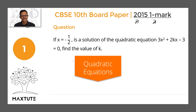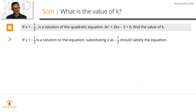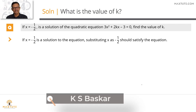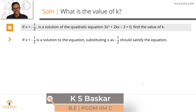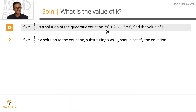The first question is from quadratic equations. If x equals minus half is a solution of the quadratic equation 3x² + 2kx − 3 = 0, we need to find the value of k. The concept here is simple: if x = −1/2 is a solution, substituting it into the equation should satisfy it.